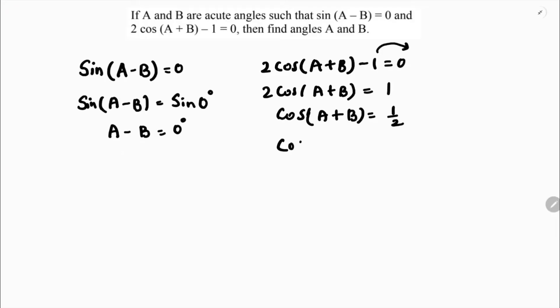Now cos(A+B) equals 1/2, you will get cos 60 degrees. So clearly A plus B is 60.